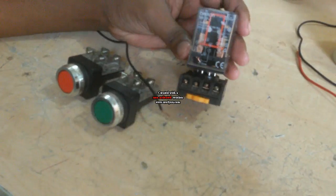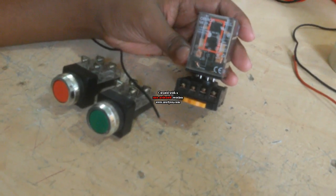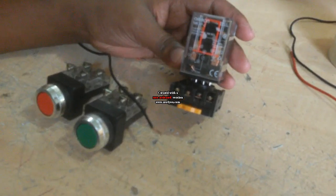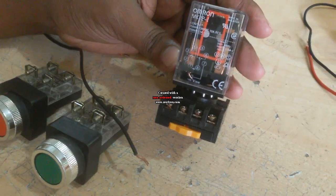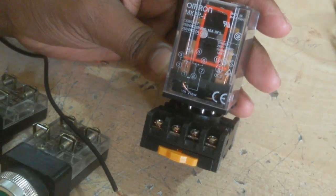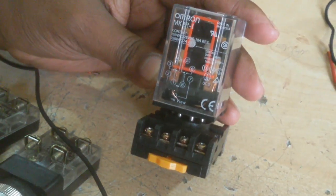You also know this relay has 8 terminals. Here is 2 and 7 number terminals, the relay coil. And 1 and 4 number terminals are NC, and 8 and 5 number terminals are NC. And 1 and 3 number terminals are NO, and 8 and 6 number terminals are NO.